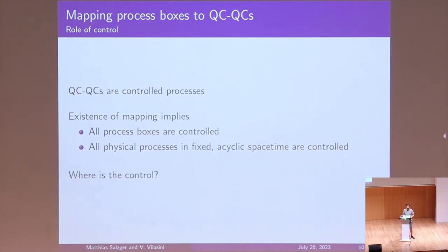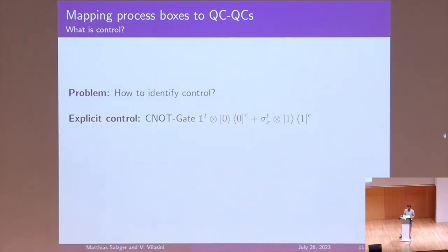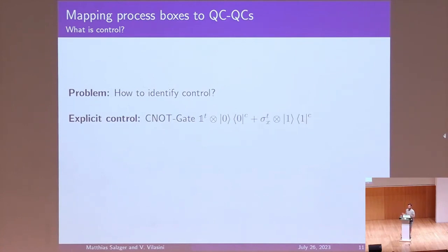So we can ask: where is the control, and why should everything in fixed acyclic spacetime be controlled? First we need to ask what control even is, and how to identify it. Looking at the CNOT gate, you have the identity applied to the target if the control is in state zero, and a bit flip applied if the control is in state one — this is very obvious control with an explicit control system. But you could also have implicit control: a beam splitter takes an incoming photon and if it's in state zero it gets transmitted while nothing is reflected, and if it's in state one it gets reflected. This is also control, just implicit — the process is controlled by the state of the target system rather than a separate explicit control system.